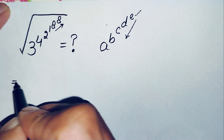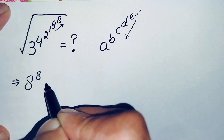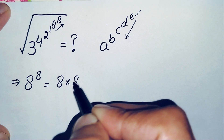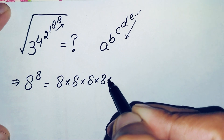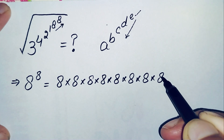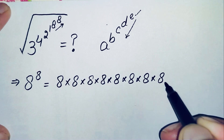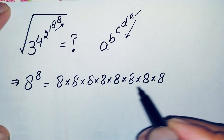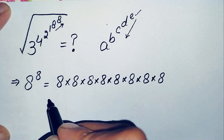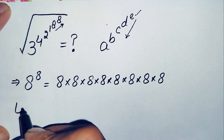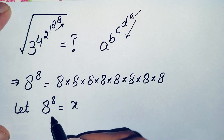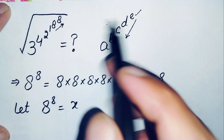According to this property, first we will try to solve the topmost power: 1 raised to power 8. What is the value of 1 raised to power 8? We can write 8 raised to power 8 as multiplying the base 8 eight times. This gives a very large number, so let us suppose 8 raised to power 8 is equal to x. We replace this power with x.